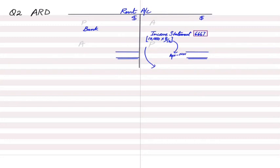Now let's look at accruals and prepayments. We pay rent in three-month installments — 12 months divided by 4 installments equals 3 months each. The first payment on 1st April covers April, May, and June.